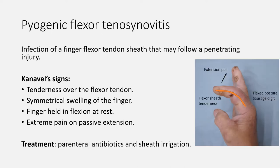Now let's move to the hand. You should know pyogenic flexor tenosynovitis — an infection of a finger flexor tendon sheath that may follow a penetrating injury. Classically, the evidence is in the form of Kanavel's signs, which include: tenderness over the flexor tendon, symmetrical swelling of the finger, finger held in flexion at rest, and extreme pain on passive extension. Note that redness and hotness are not included in these signs. Treatment consists of parenteral antibiotics and sheath irrigation.